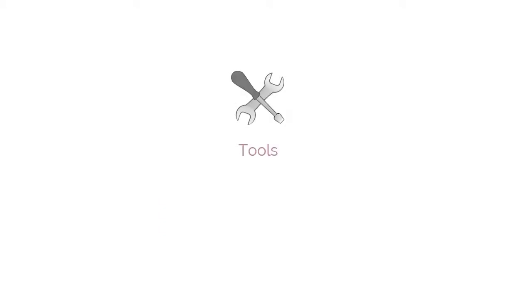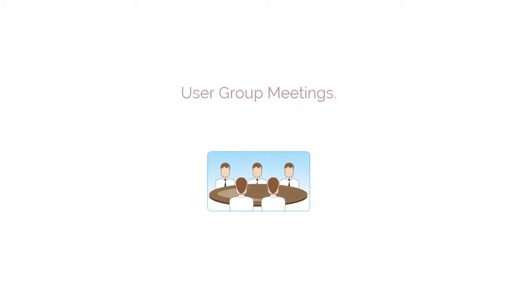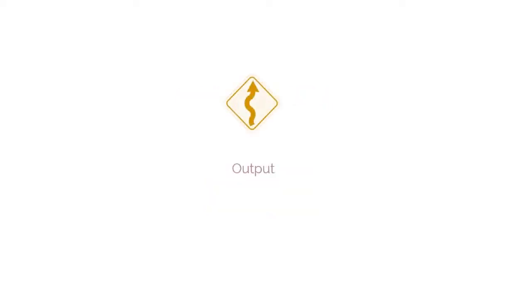The tool that is to be mandatorily used as part of this process is user group meetings. For a detailed explanation of this tool, please refer to the discussion on it in the Create User Stories process. The mandatory output of this process is approved, estimated, and committed user stories.